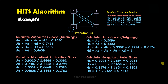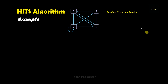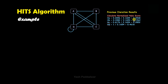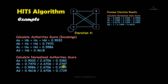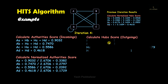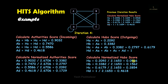In iteration 4, we carry forward the normalized hub scores from iteration 3. We calculate the authority scores, then the normalized authority scores, then the hub scores, and finally the normalized hub scores. If you carefully compare the normalized hub score values of iteration 4 with those from iteration 3, they are almost the same — only a slight difference remains.